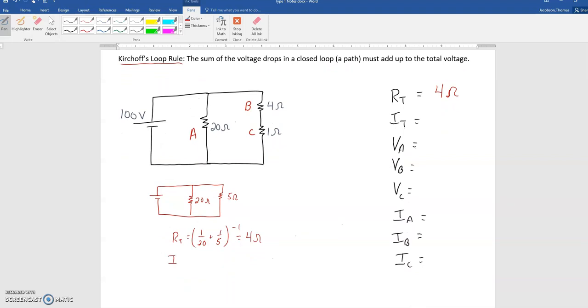total voltage. So to solve for the total current, I can do the total voltage over the total resistance that we just found, and we can do a hundred over four, and we can get 25 amps, which is a lot, but that's fine, 25 amps in this circuit coming right out of the battery.